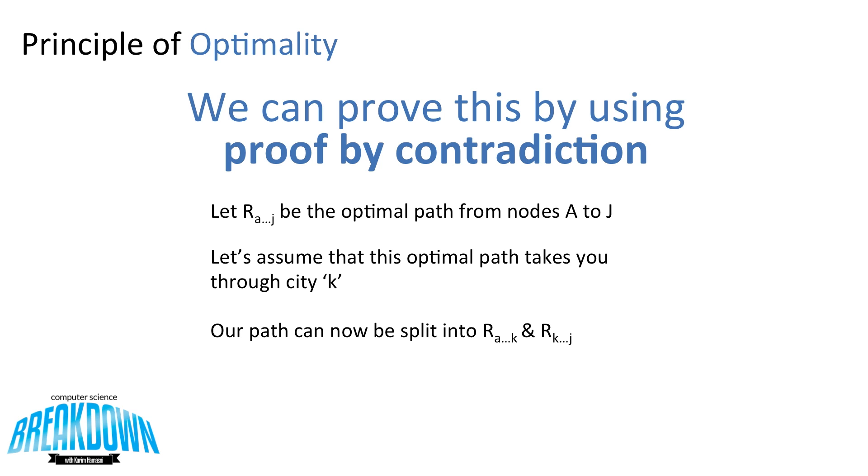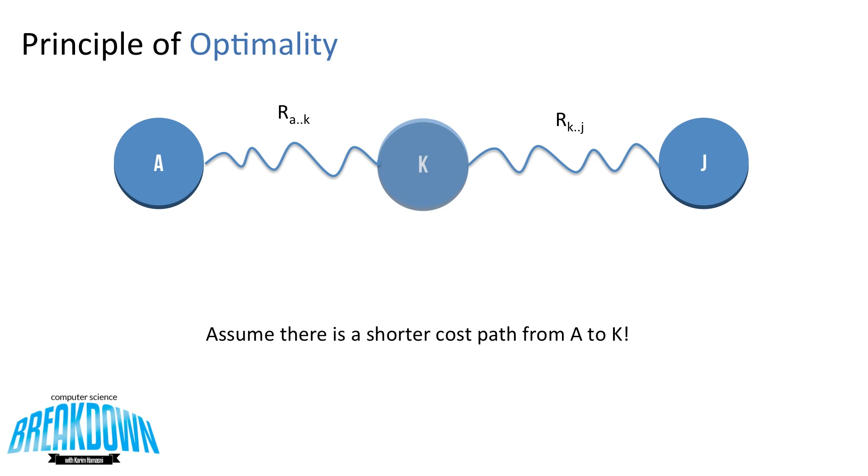We'll start our proof by saying let R A to J be the optimal path from nodes A to J, R being the symbol for the word root. Let's assume that this optimal path takes you through a city K. Our path can now be split into R A to K and R K to J.